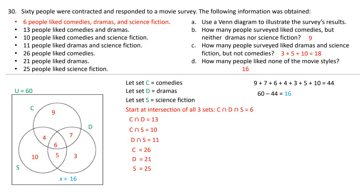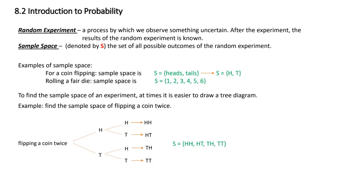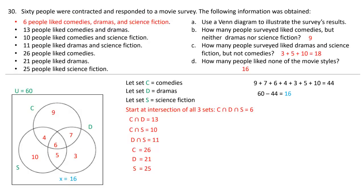Here's an example: 60 people were contacted to respond to a movie survey. Six people liked comedies, dramas, and science fiction — that's our center intersection. Thirteen people liked comedies and drama — that's the intersection between comedies and drama. We build the Venn diagram working from the intersections outward, then subtract to fill in each region accurately. When building Venn diagrams, always build from the inside out.